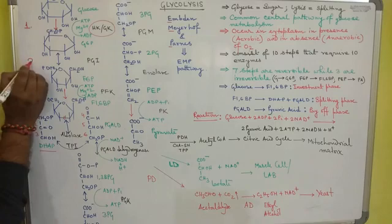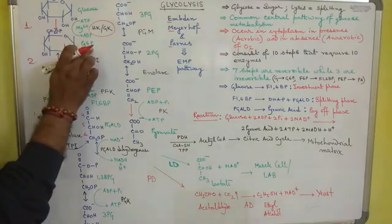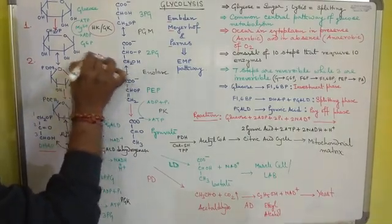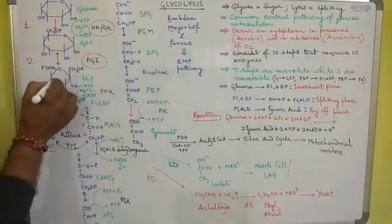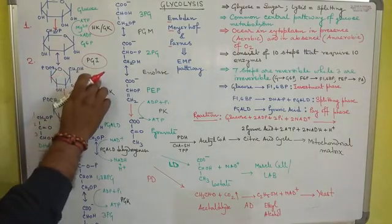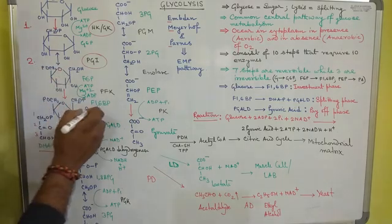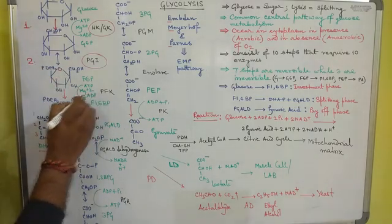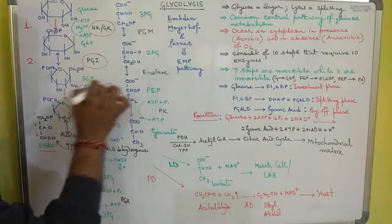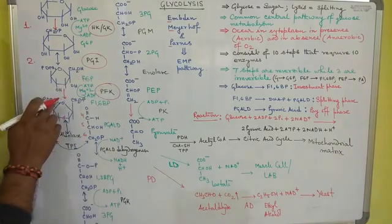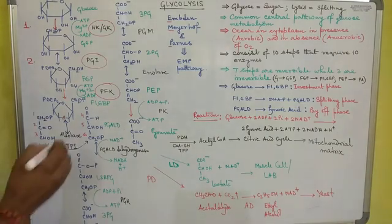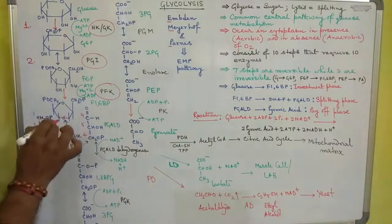In the second step, glucose 6-phosphate undergoes an isomerization reaction by the enzyme phosphoglucoisomerase and is converted into fructose 6-phosphate. Then fructose 6-phosphate is converted into fructose 1,6-bisphosphate by the enzyme phosphofructokinase, where both the 1st and 6th positions get phosphorylated. Here also ATP supplies the phosphate group and is converted into ADP.